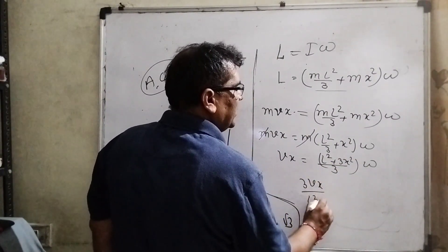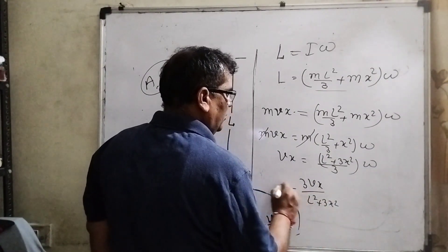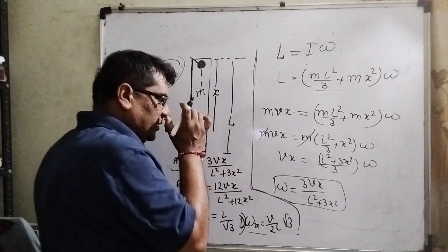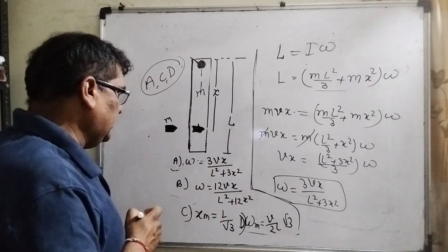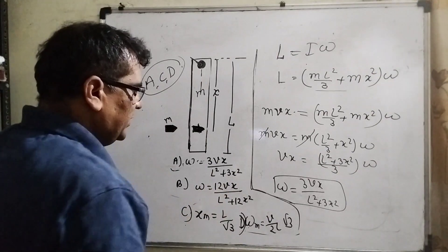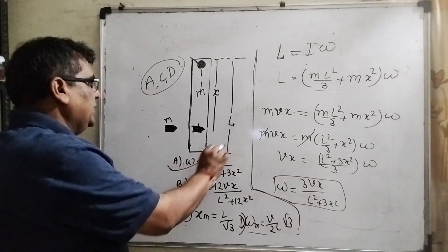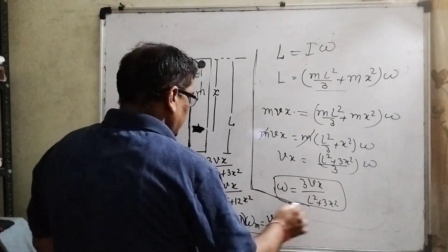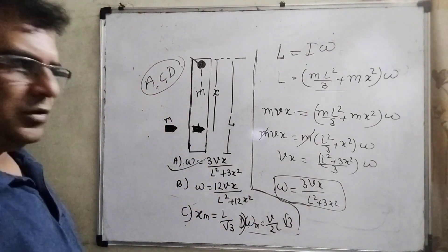Then vx equals L² + 3x² omega. Then 3vx upon L² + 3x² equals omega. Let's see which option matches our answer. You can see that omega equals 3vx upon L² + 3x². First option is correct.